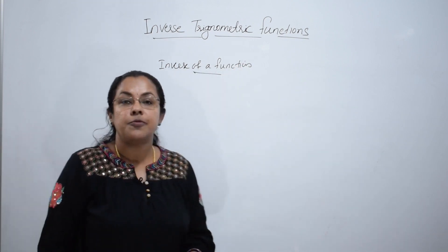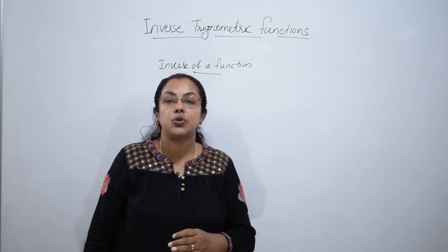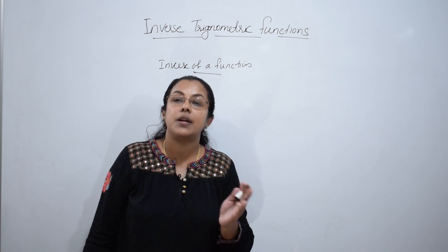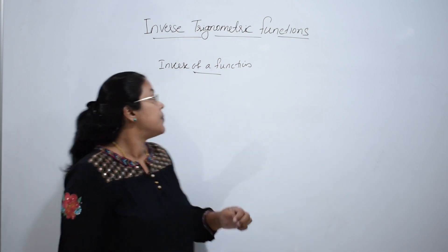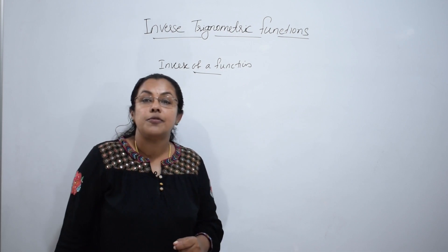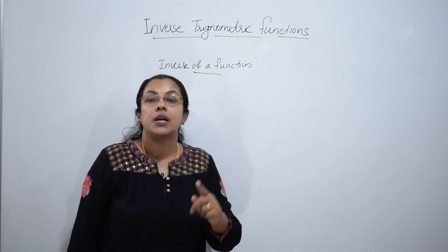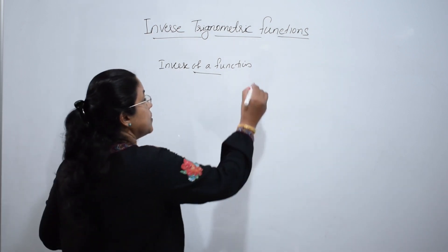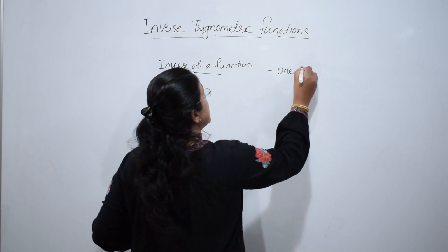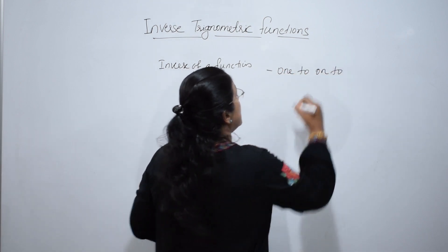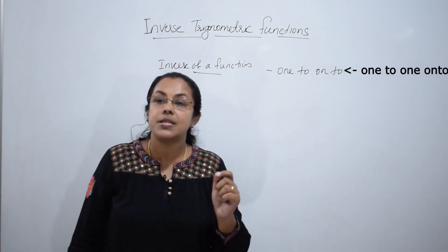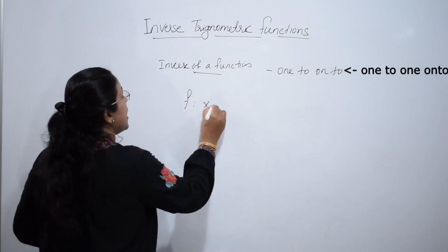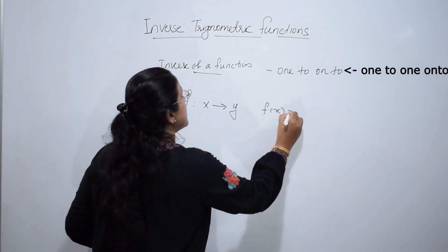You have learnt the term function last year. Many to one and one to one relations are called functions. So, what is the meaning of inverse of a function? Inverse of a function exists if and only if it is one to one and onto. A function F from X to Y such that F of X is equal to Y is one to one and onto.